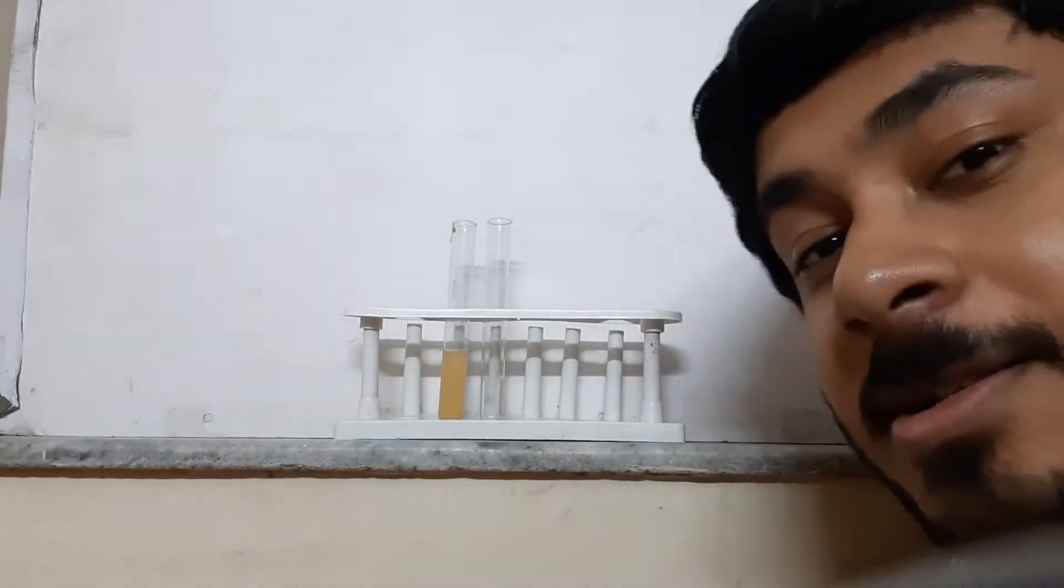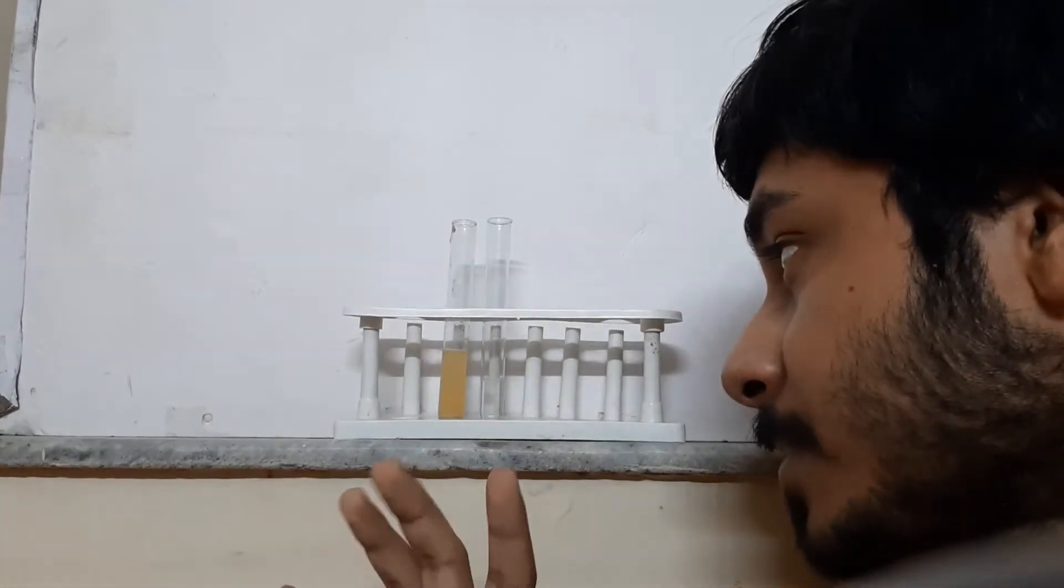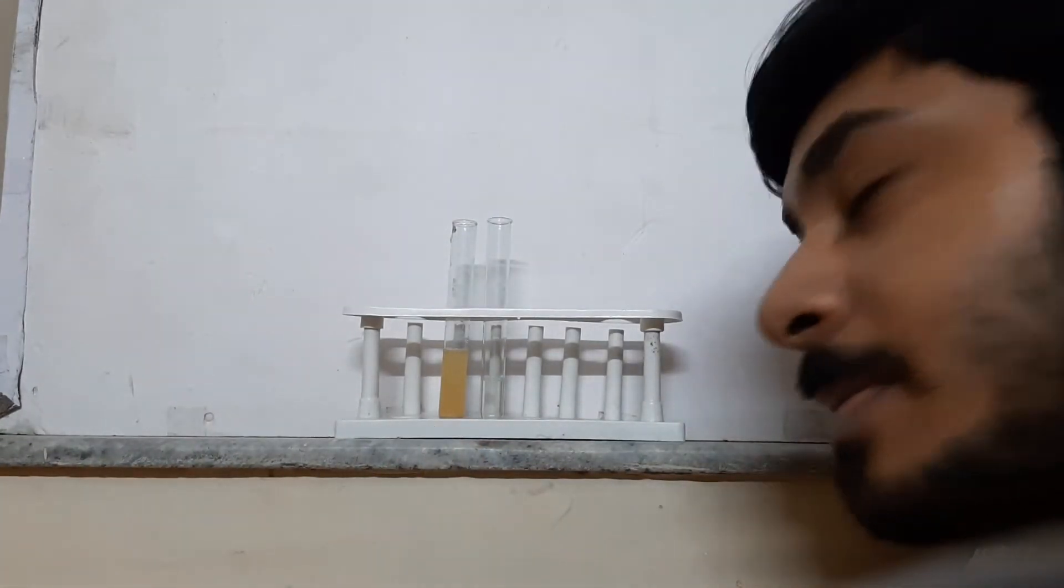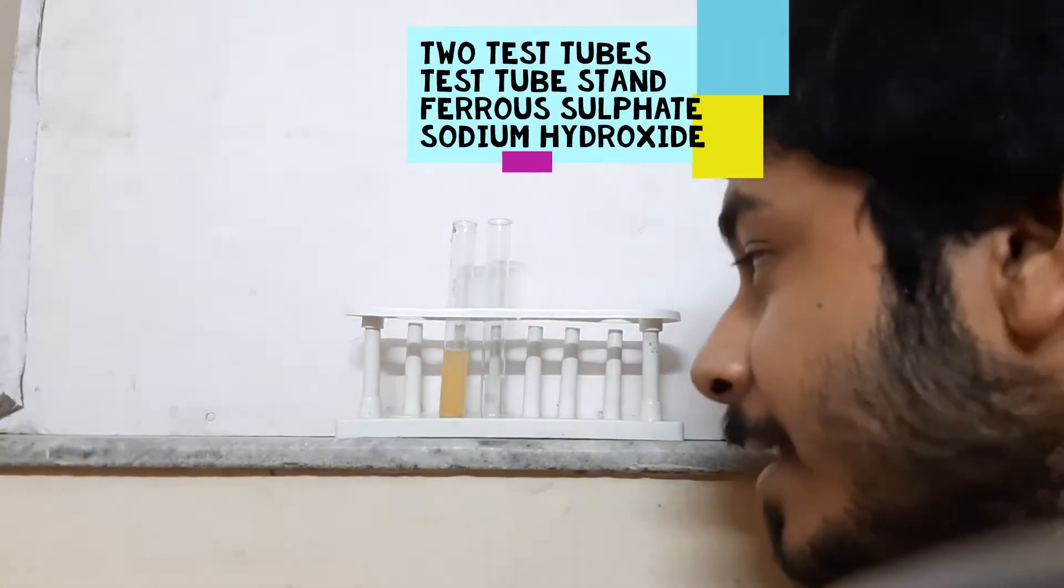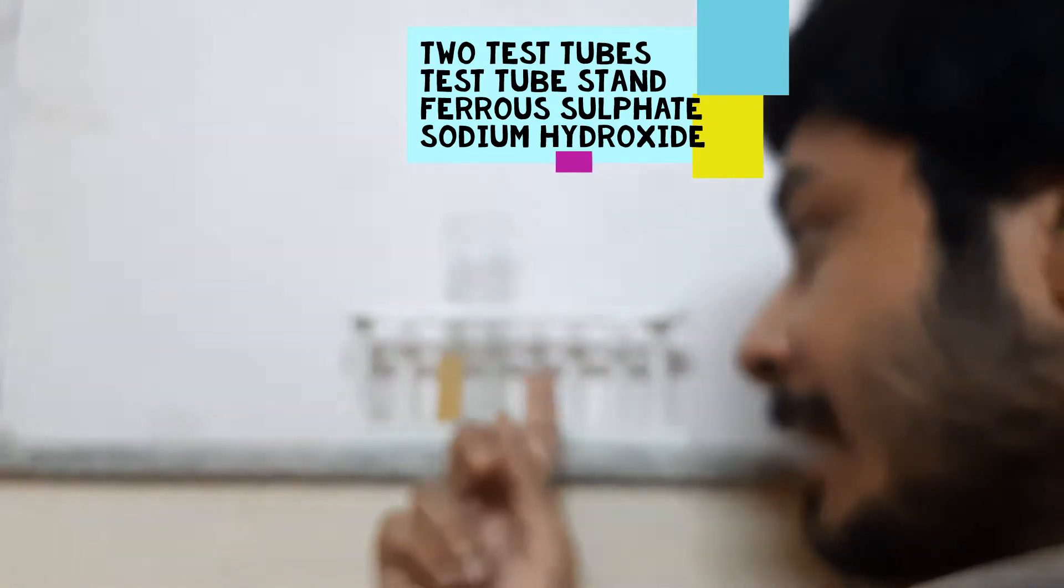Let me explain the apparatus - it's very simple. I have two test tubes in a test tube stand: the first one has ferrous sulfate and the second one has sodium hydroxide.